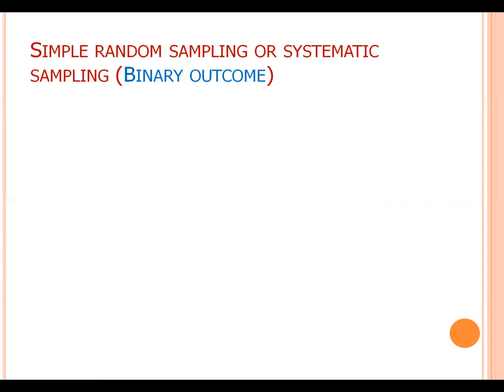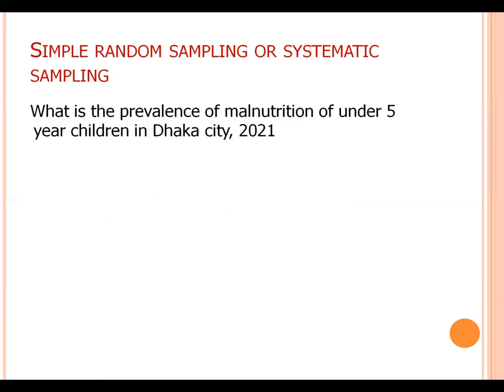I have described binary outcome. A research question is: what is the prevalence of malnutrition under five year children in Dhaka city? That means we have to estimate a prevalence.